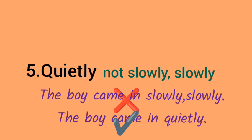The sentence with 'slowly slowly' is wrong, and the second sentence — 'The boy came in quietly' — is correct. 'Quietly' means coming in without making noise, you know, coming in quietly.